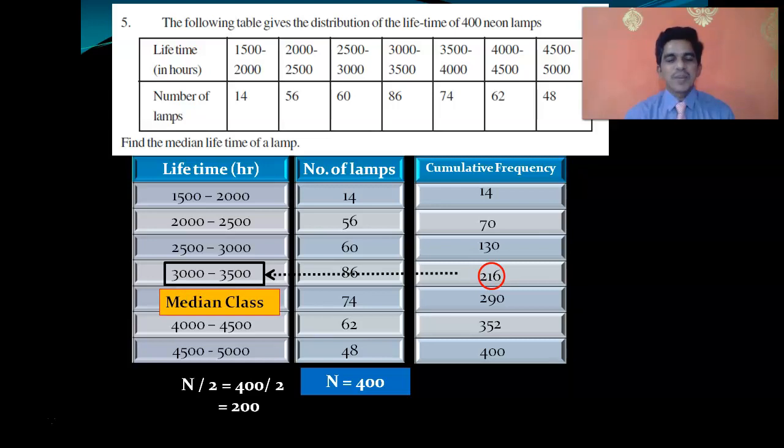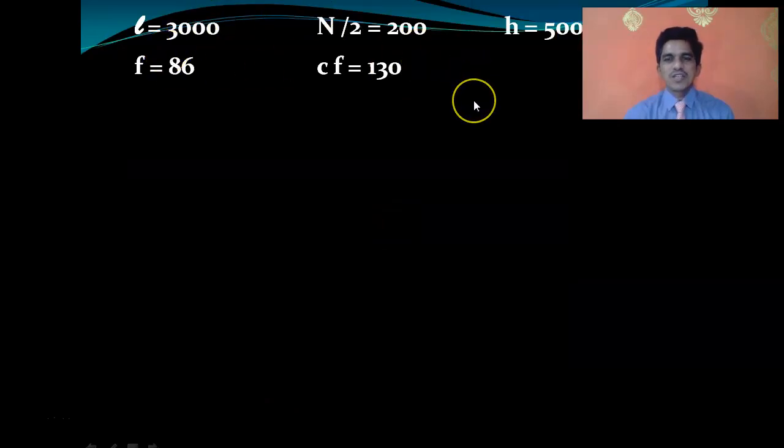Write f, the median class frequency, cf, the cumulative frequency of the class before median class, and l, the lower boundary. For exclusive classes, boundaries equal limits, so l is 3000. H is 2500 minus 2000, which is 500. The values are: l is 3000, n by 2 is 200, h is 500, f is 86, and cf is 130.